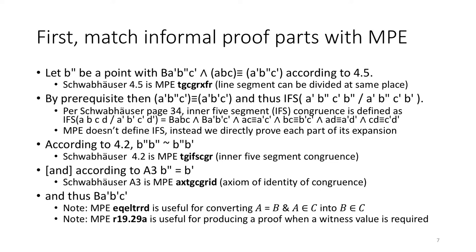So what we're going to do first is look at the informal proof and find the parts that match or map to MPE. For example, it mentions that we're going to use something called 4.5. Schwabhauser 4.5 is already proved in MPE as this particular theorem TG CGR XFR. It also says that by prerequisite, certain things are congruent and therefore they meet this particular relation called IFS. Schwabhauser defines IFS in page 34. MPE doesn't directly define IFS. Instead, we'll just simply expand it and use parts of those expansions we need. Schwabhauser uses Schwabhauser 4.2 that has another MPE equivalent TGIF SCGR, which is inner five segment congruence. And then it refers to axiom A3 and it has that MPE mapping right there.